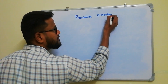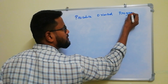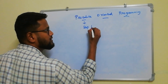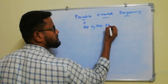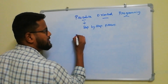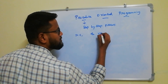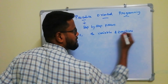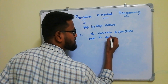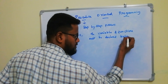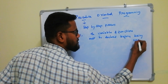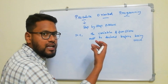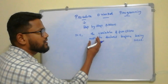Next is procedural oriented programming. What is meant by procedural oriented programming? Procedure is nothing but a step by step process. In C, the variables and functions must be declared before being used. We use variables and functions in a C program. This is procedural oriented.